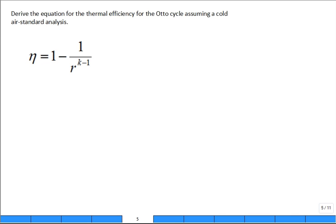Derive the equation for the thermal efficiency of the Otto cycle assuming a cold air standard analysis. So this is the equation we want to derive. It's a classic equation. How do we derive this equation? We'll go back to the basics.